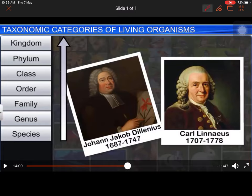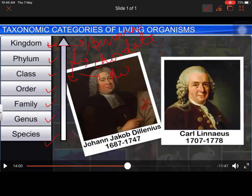This hierarchical system of classification works as follows: if we consider humans, we start at species level, then go up to genus, then family, then order, then class, then phylum, and finally kingdom. Humans belong to the animal kingdom, phylum Chordata (as we have a vertebral column), class Mammalia (Hominidae), and our genus is Homo and our species is sapiens. So humans are Homo sapiens, maintained in a clear hierarchy.